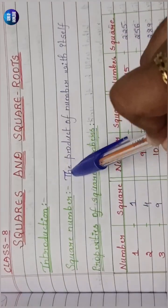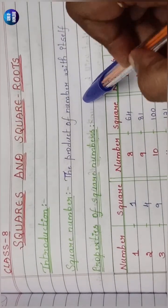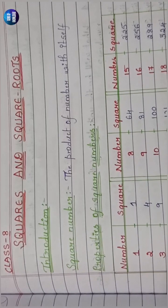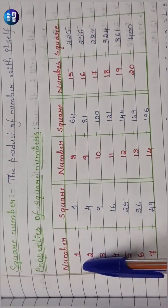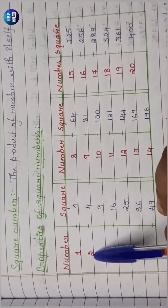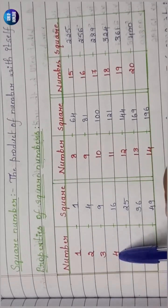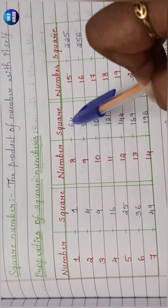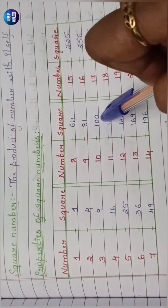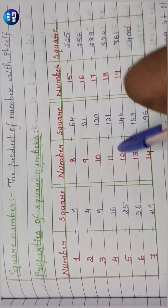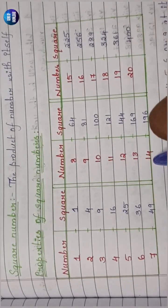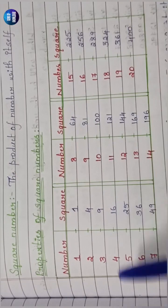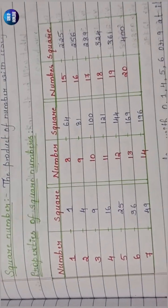First we need to learn what square numbers are. When a number is multiplied by itself, that particular result is known as a square number. Some square numbers are shown in the table: 1×1=1, 2×2=4, 3×3=9, 4×4=16, 5²=25, 6²=36, 7²=49, 8²=64, 9²=81, 10²=100, 11²=121, 12²=144, 13²=169, 14²=196. These are the square numbers from 1 to 20.